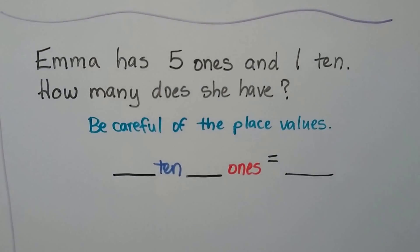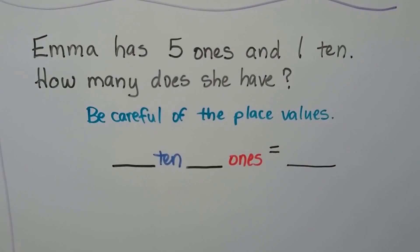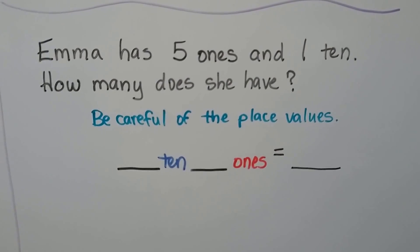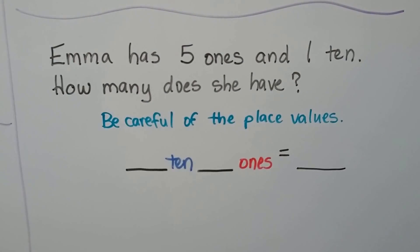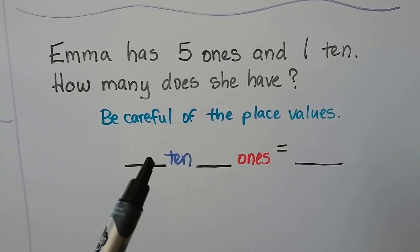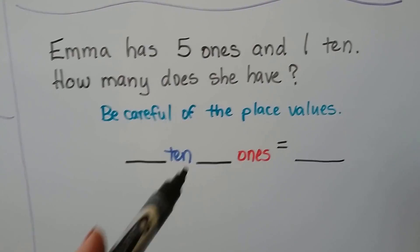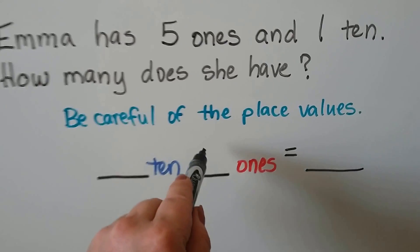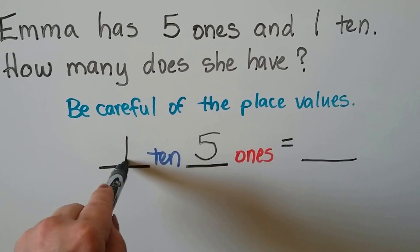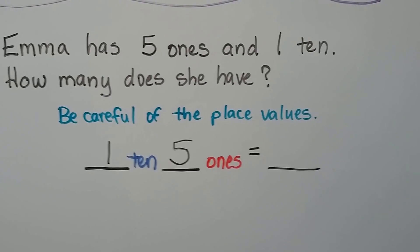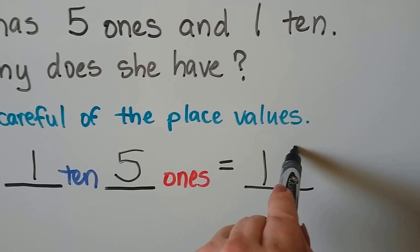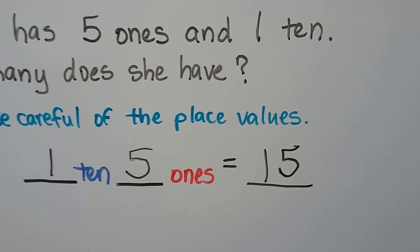Emma has five ones and one ten. How many does she have? We have to be very careful of the place values. It's telling us she has five ones first, but we know that we have to write the tens on this side and the ones on this side. She has five ones and she has one ten. We put a one in the tens place and a five in the ones place. She has fifteen.